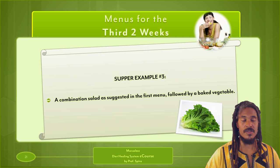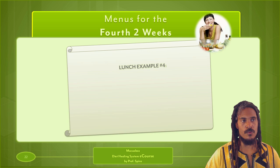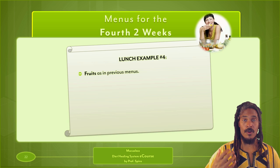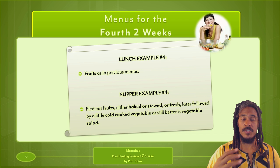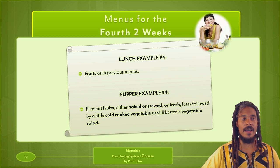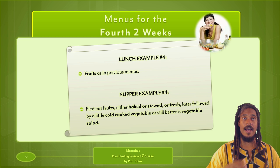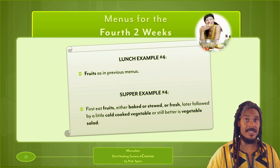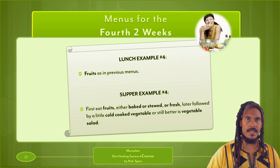For the fourth two weeks, things get simpler: just a fruit meal for lunch. The best situation is to have a raw fruit meal with one type of fruit. For supper, we have Ehret's two-course meal — fruits, either baked, stewed, or fresh, followed later by a cold cooked vegetable or even better a vegetable salad combined with the cooked vegetable. I always have a raw salad with a cooked vegetable — that is a principle for me.